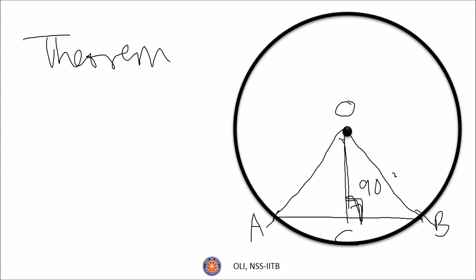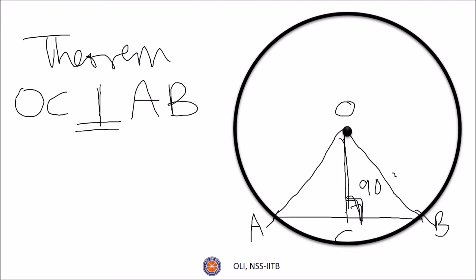OC is perpendicular to AB. AB is a line.